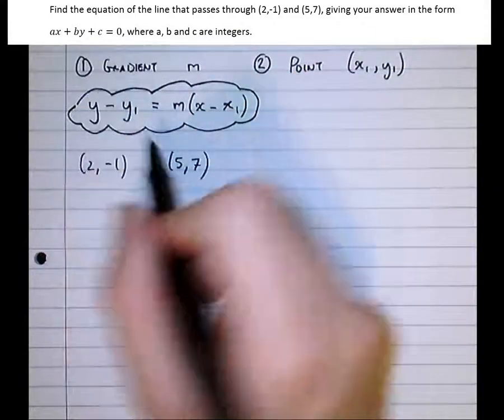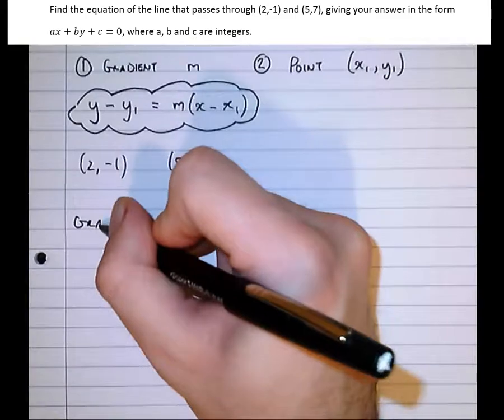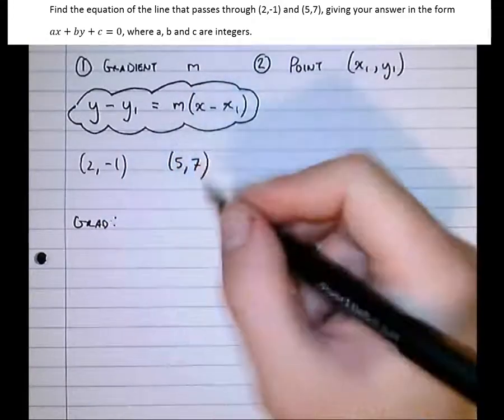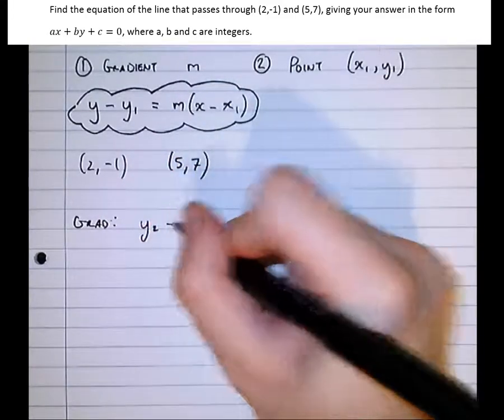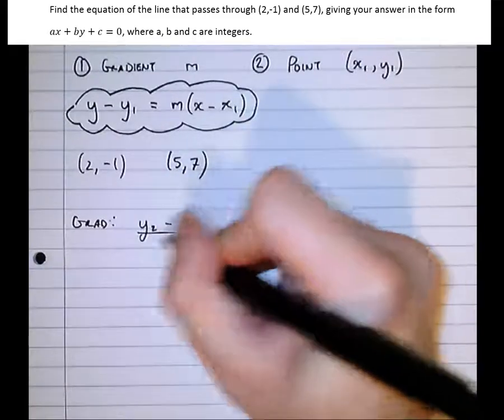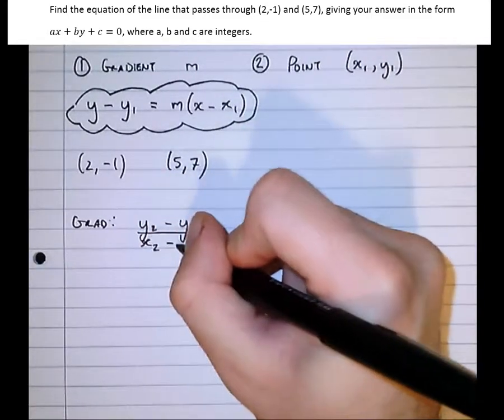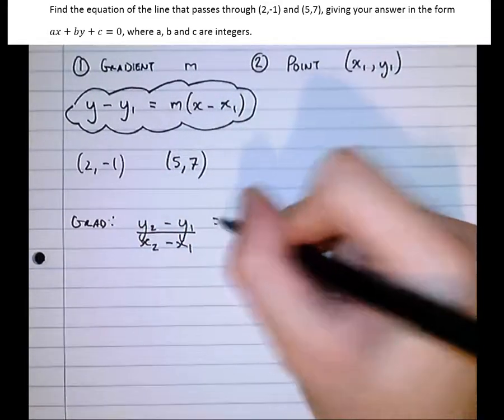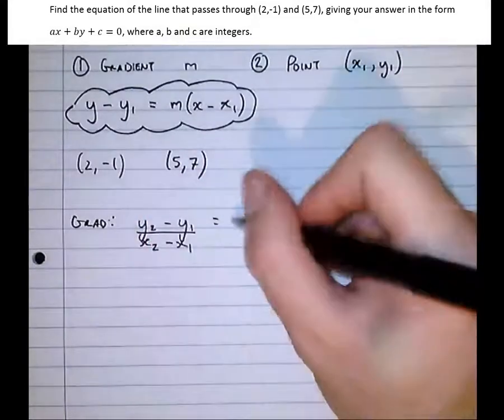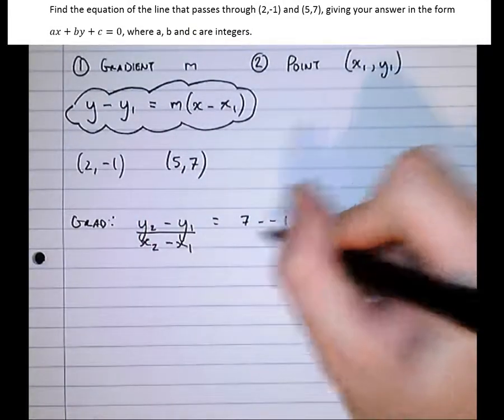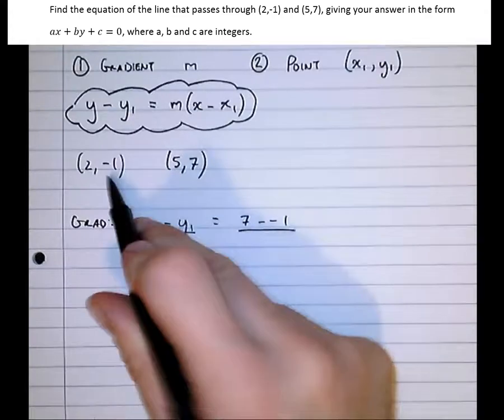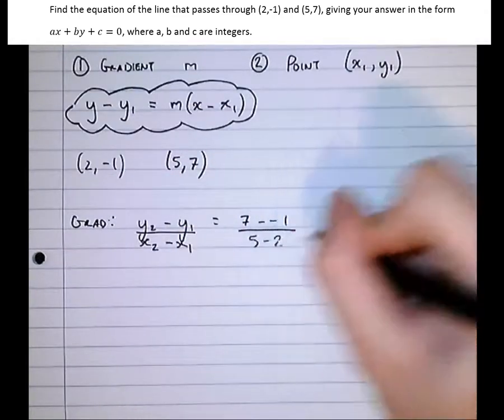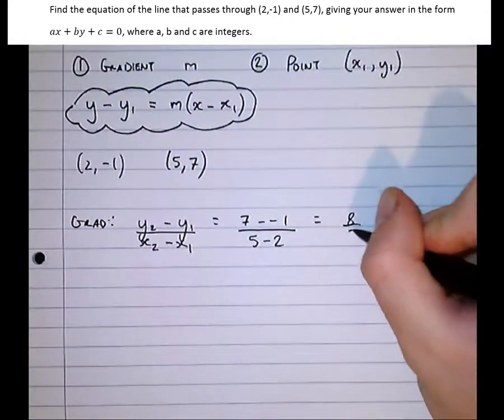Well first of all, let's find the gradient between these two points. So the gradient is the y difference over the x difference, which is equal to 7 minus -1 over 5 minus 2 equals 8 over 3.